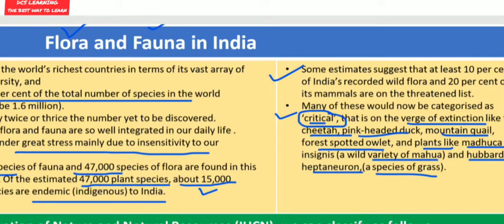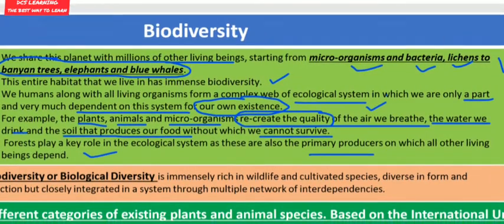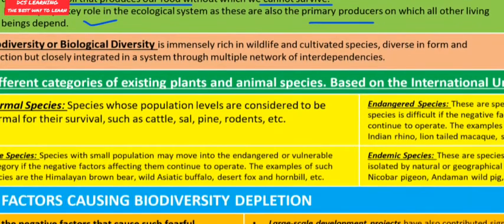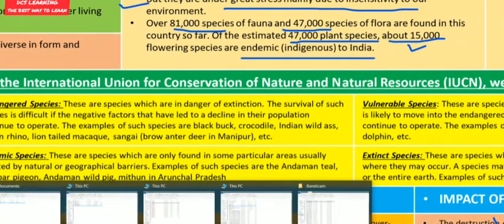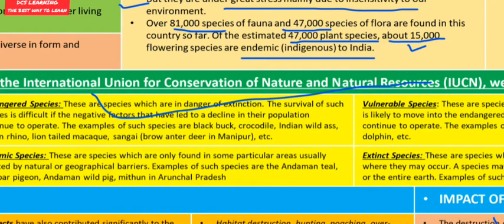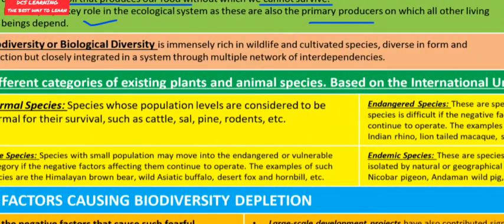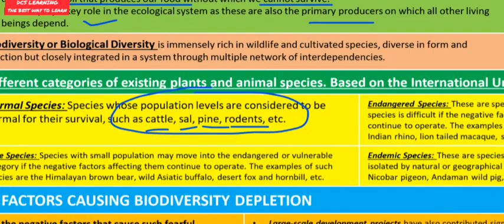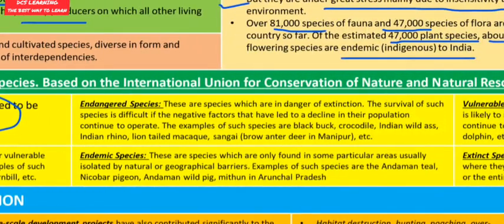Various categories of existing plant and animal species are classified based on IUCN — the International Union for Conservation of Nature and Natural Resources. The first category is normal species, whose population levels are considered adequate for their survival. Examples include cattle, sal, pine, rodents and moles.